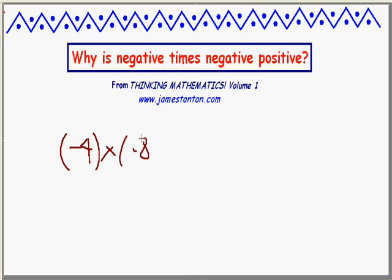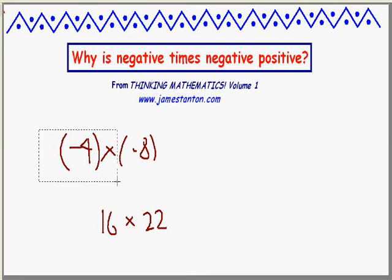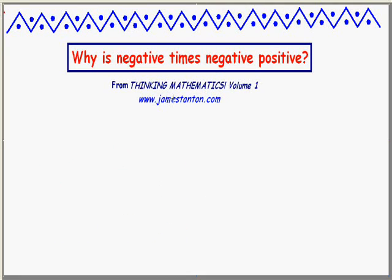In fact, you can use this argument for any pair of negative numbers — when multiplied together they must be positive. For example, if you want to show that negative 4 times negative 8 is positive, you'd look at something like 16 times 22 and think of that in two different ways. For those who want the true mathematical reasons why negative times negative is positive, it's hidden behind the scenes in this argument — let me give it to you. One begins by listing the rules of arithmetic that one thinks should be true.